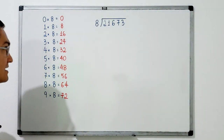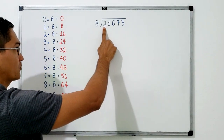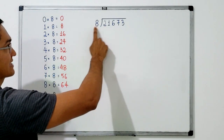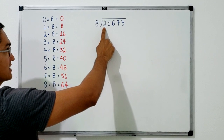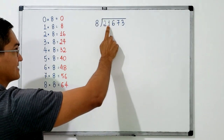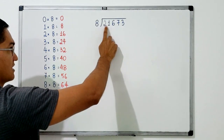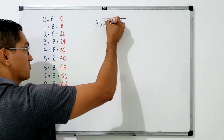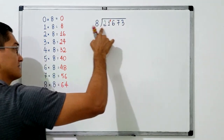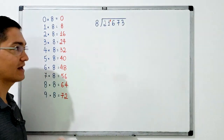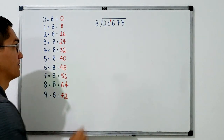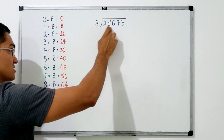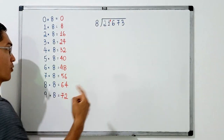We start by looking at the first digit. Since 2 is less than 8, we do not start yet — we group it with the next digit. Now we have 21, and since 21 is more than 8, we can start. I ask: how many times does 8 go into 21 without going over?